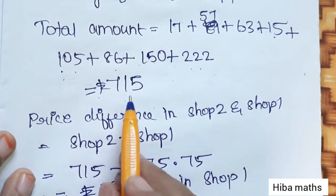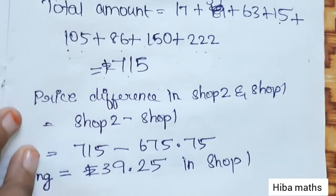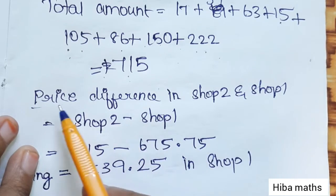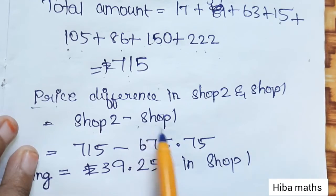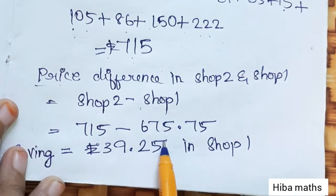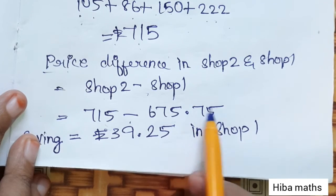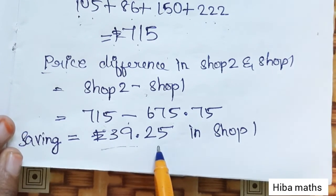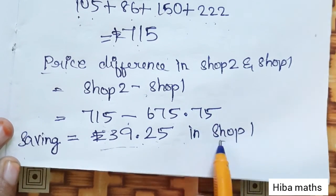Shop 2 total is 715 rupees and shop 1 is 675.75 rupees. Price difference: shop 2 minus shop 1 is 715 minus 675.75, which equals 39.25 rupees. That is the savings of Rs. 39.25 by shopping at shop 1.